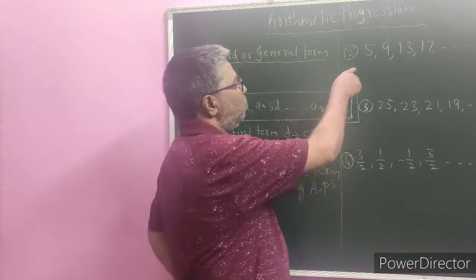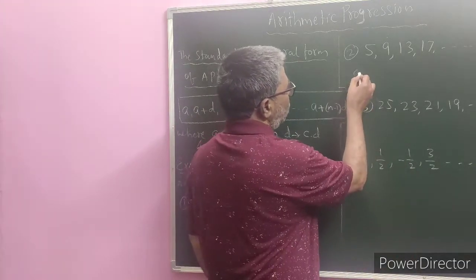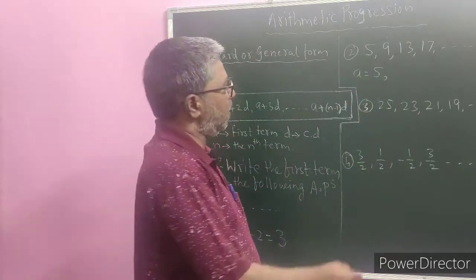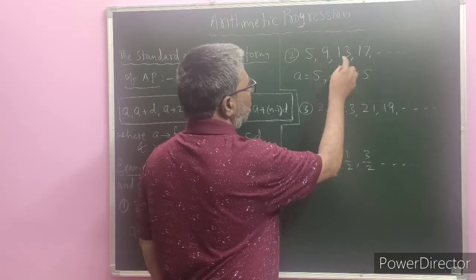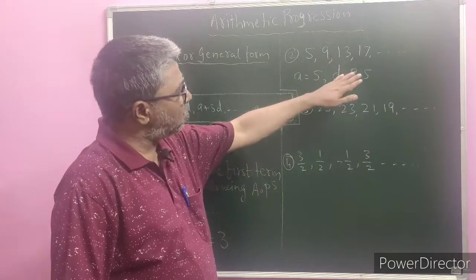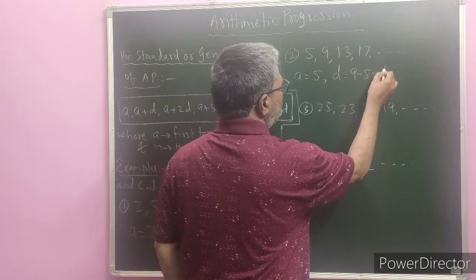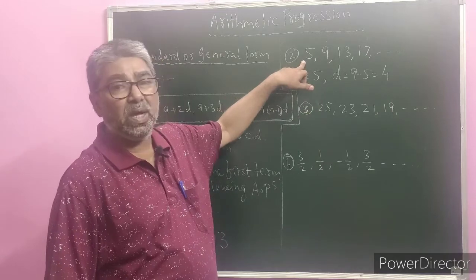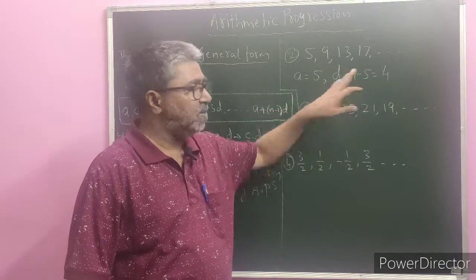Coming to example number 2: 5, 9, 13, 17, and so on. Here the value of A, the first term, is 5. The value of D is 9 minus 5. You can also write 13 minus 9 or 17 minus 13. So 9 minus 5 is 4. In this way, the first term of this arithmetic progression is 5 and the common difference is 4.